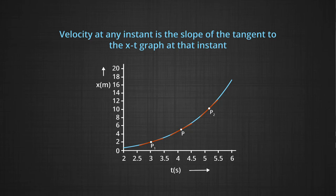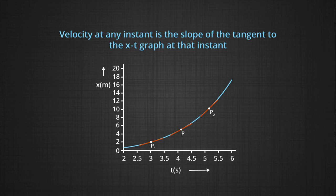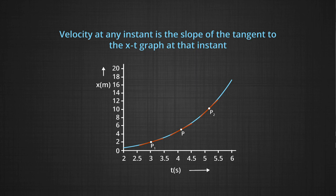Velocity at an instant is the slope of the tangent to the graph at that instant, and this tangent continuously changes. If the graph faces upward, the center of curvature lies above the line. This means the slope increases as we move from P1 toward P2, so the velocity is increasing. If the slope decreases, the velocity is decreasing.